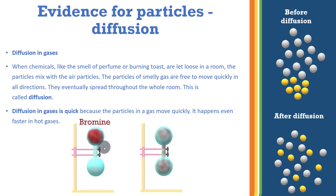There is evidence for diffusion — evidence that particles exist. It is the small particles that move from one area where the concentration is high to an area where the concentration is low.